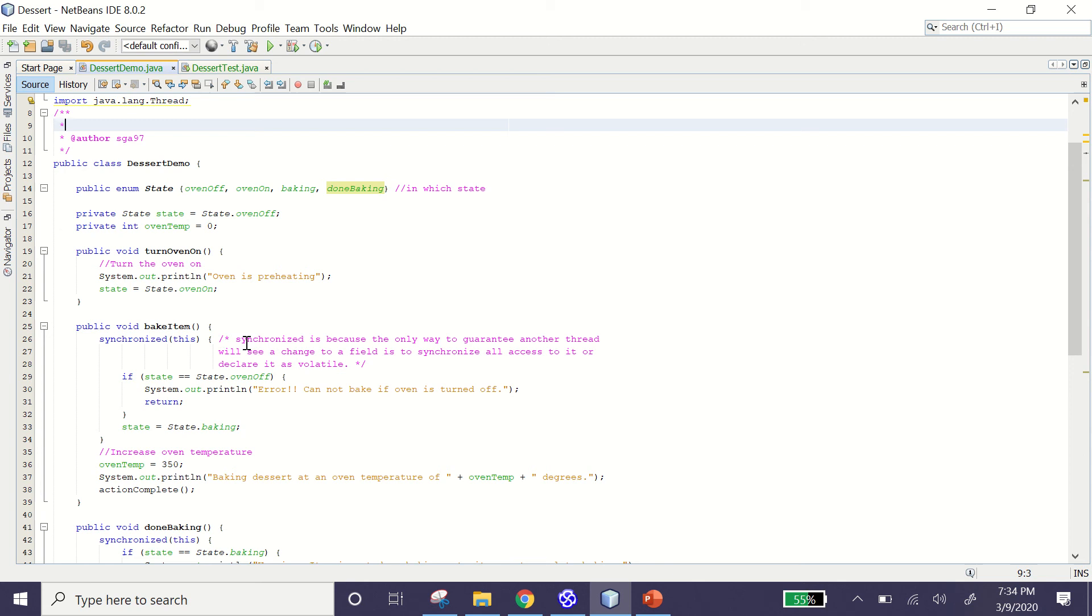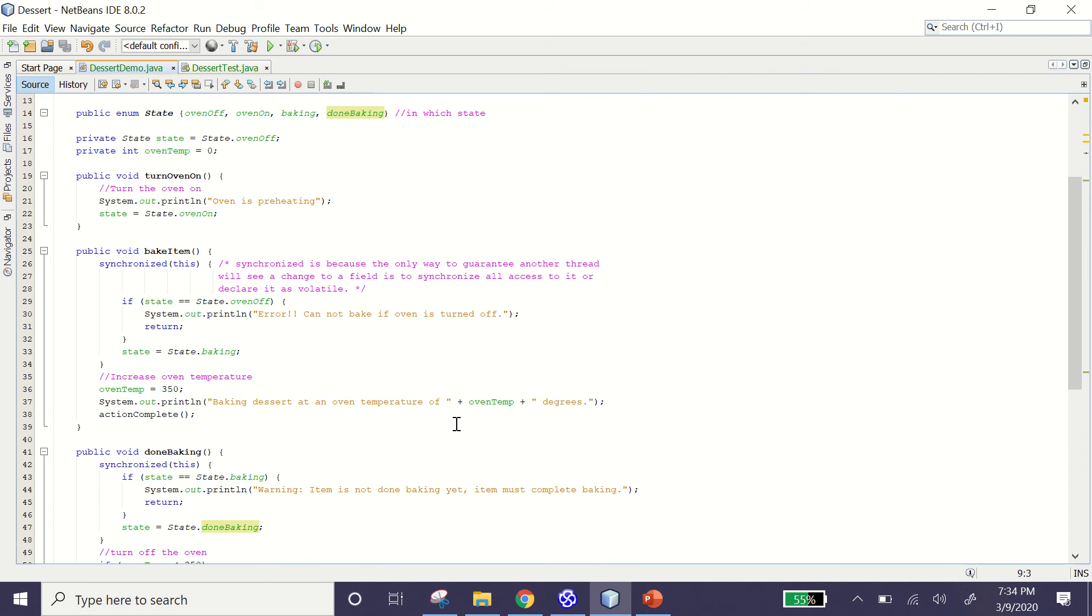And then we also have a bake item method to start baking the dessert. Here, if the state is oven off, it will balk because the dessert cannot bake if the oven is turned off. So if the oven is on, the oven temperature will increase to 350 degrees and bake, right over here.